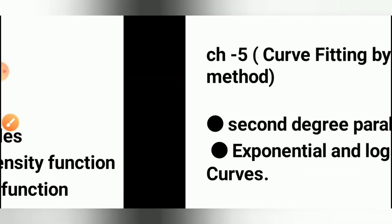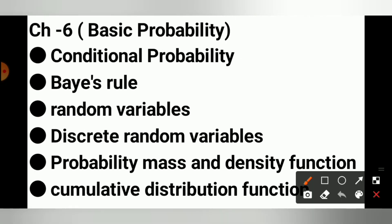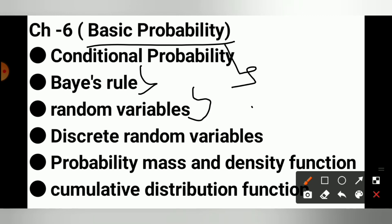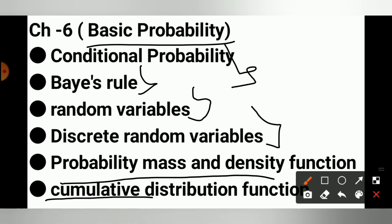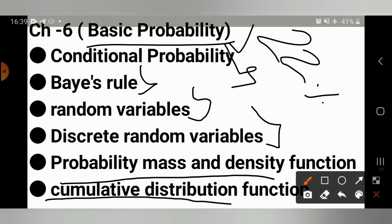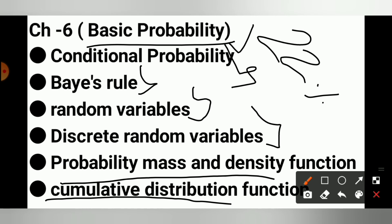Chapter No.6 — Basic Probability। जो कल्वी मैंने बुला था, Probability and Statistics में मैंने important बातें बूली थी: Conditional Probability का Example, Bayes' Rule, Random Variable, Discrete Random Variable, Probability Mass and Density Function, Cumulative Distribution Function। ये जो totally portion है वो 22% है, तो Chapter No.6 must be आपको prepare करना पड़ेगा।